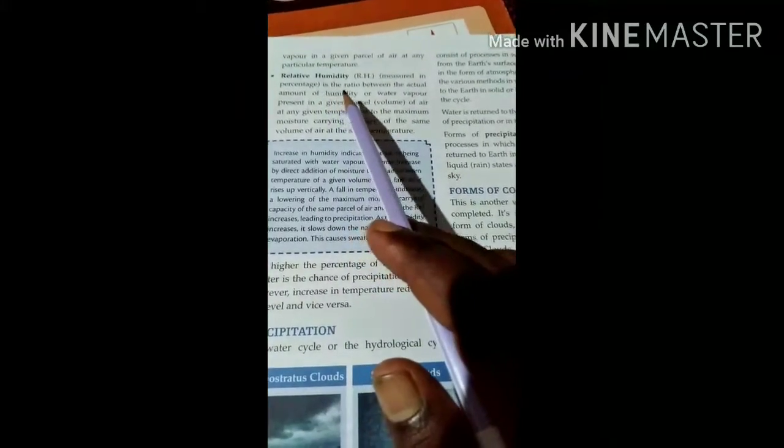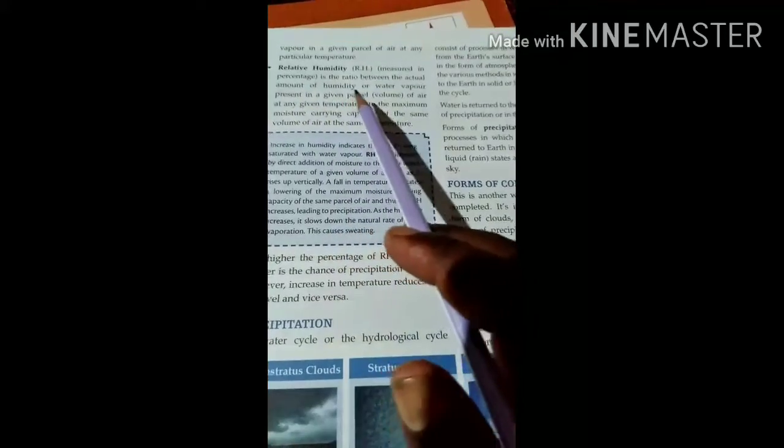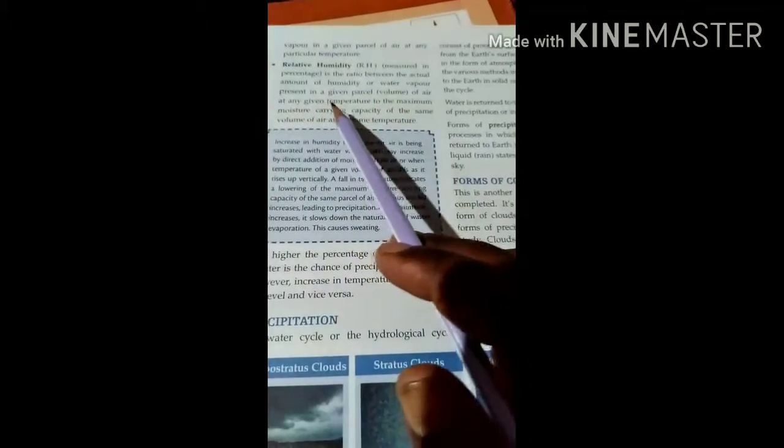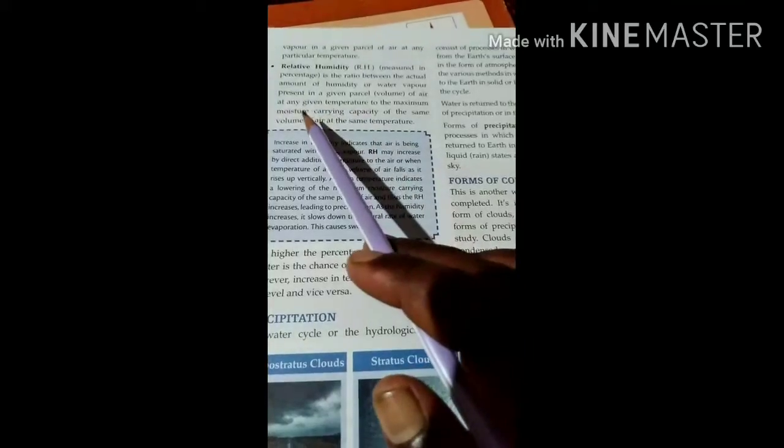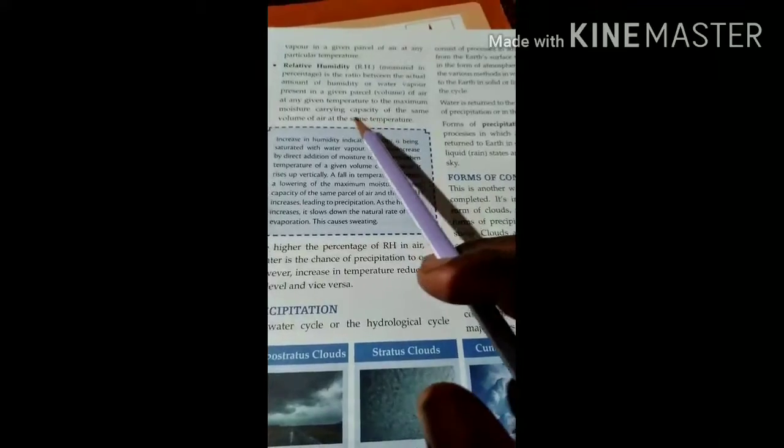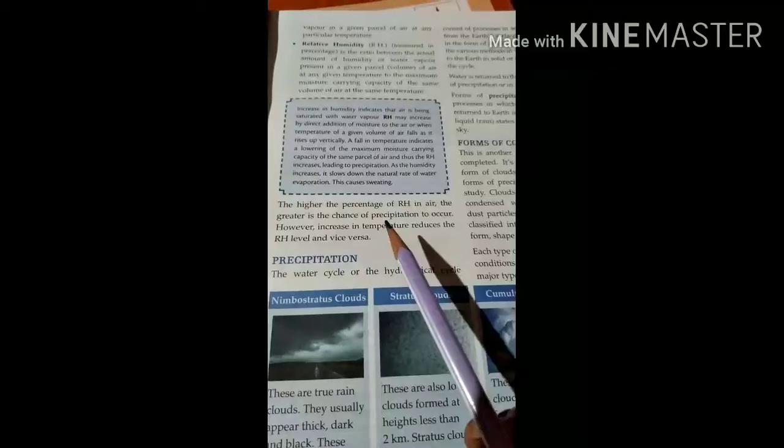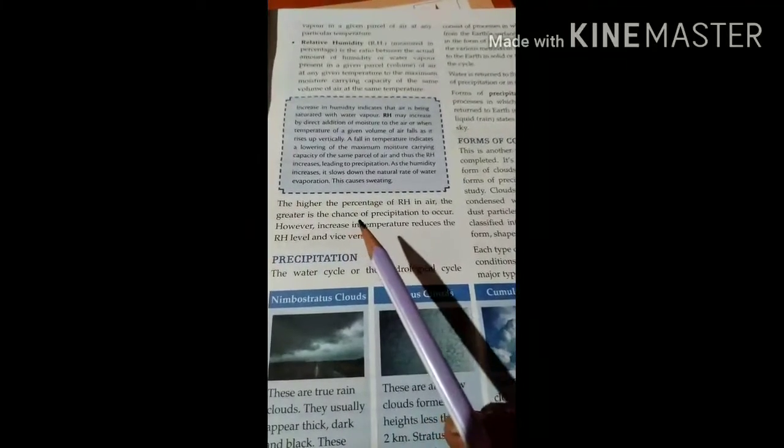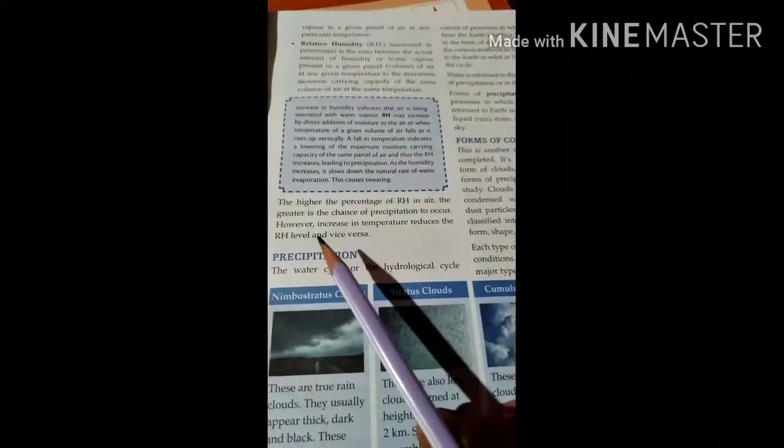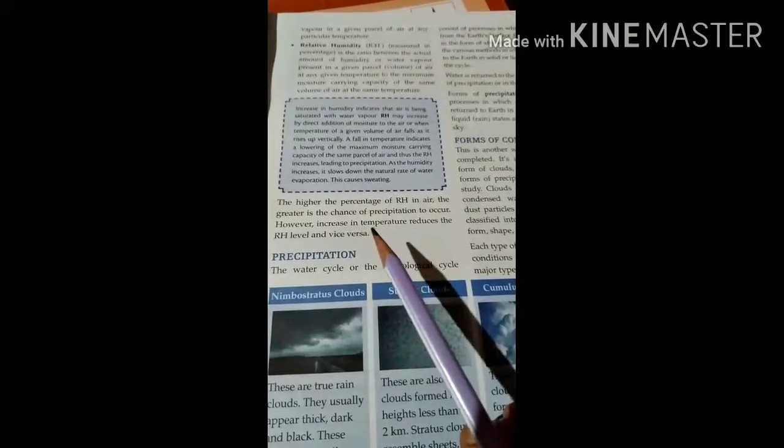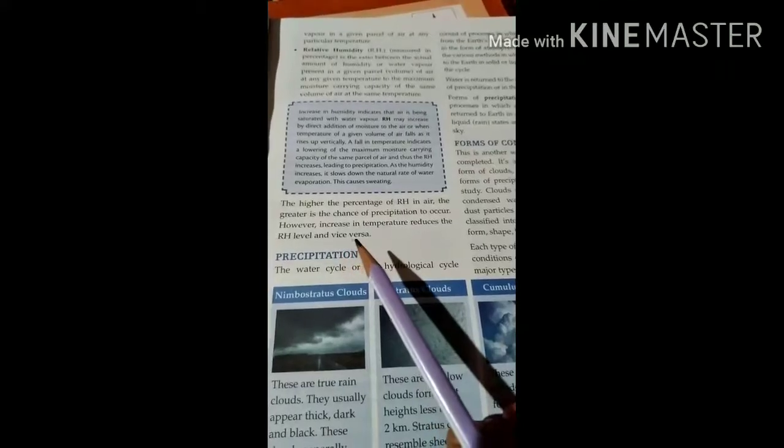Relative humidity, measured in percentage, is the ratio between the actual amount of humidity or water vapor present in a given parcel of air at any given temperature to the maximum moisture carrying capacity of the same volume of air at the same temperature. The higher the percentage of RH in air, the greater the chances of precipitation to occur. However, increase in temperature reduces the RH level and vice versa.